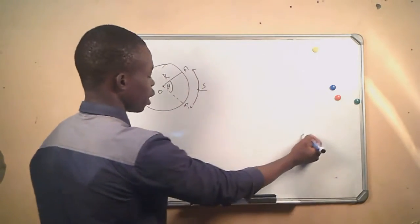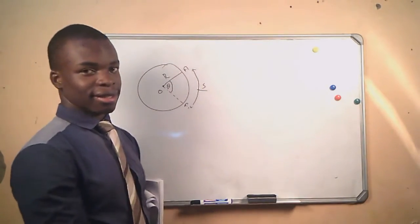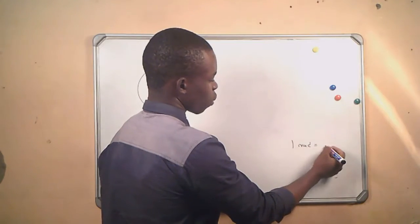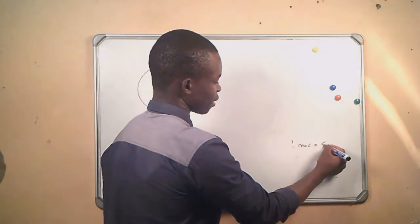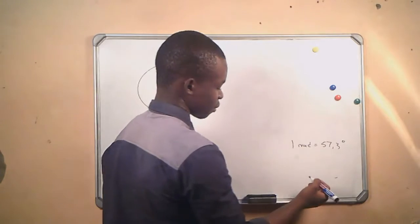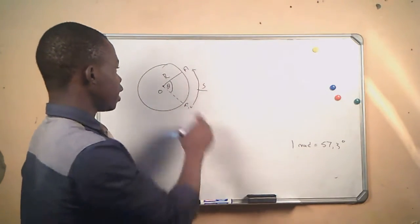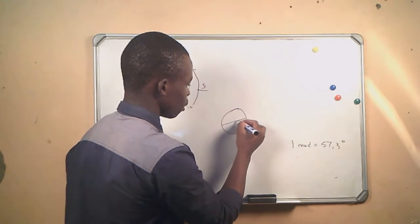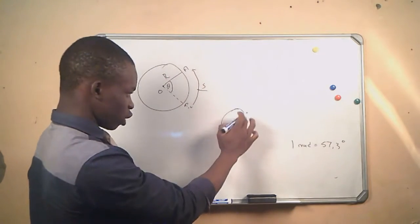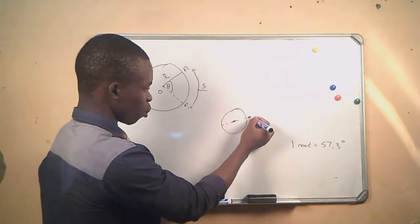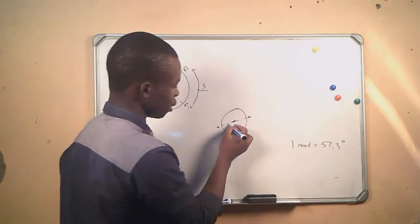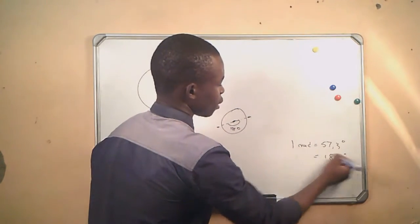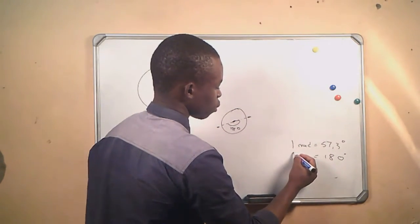Angular displacement can be measured in degrees and in radians. The relationship between the two is that one radian equals 57.3 degrees. If the wheel makes a rotation of a semicircle — from one point to the other — that angle will be 180 degrees, which equals π radians.